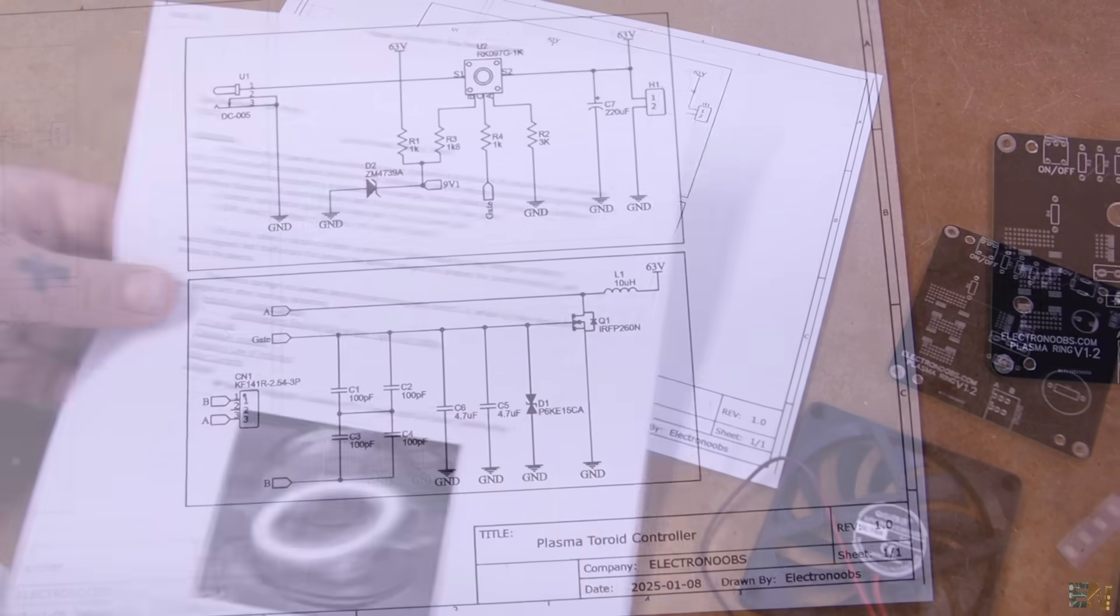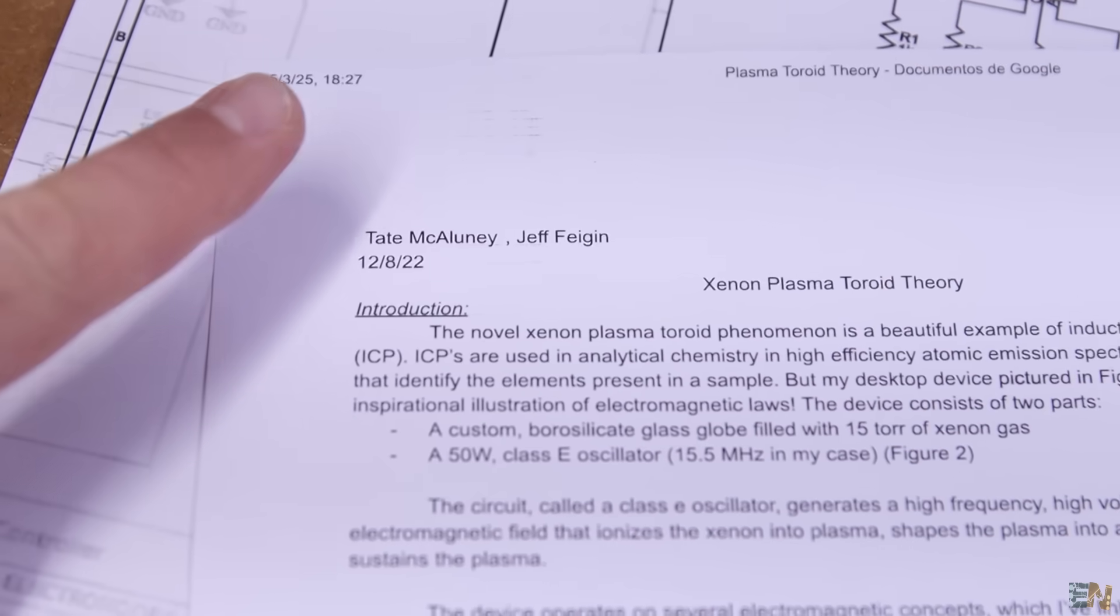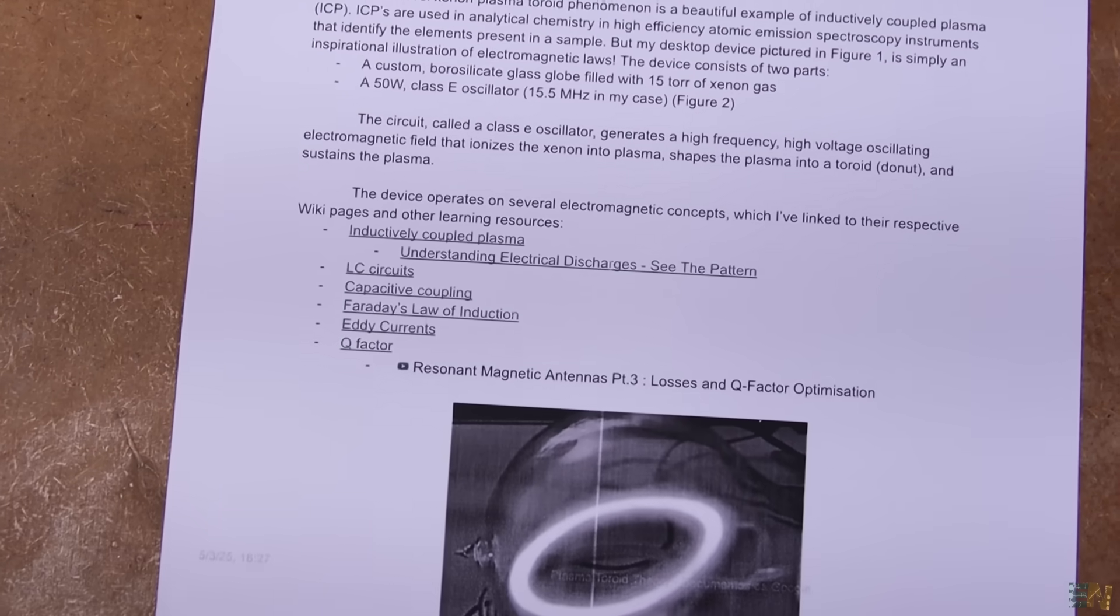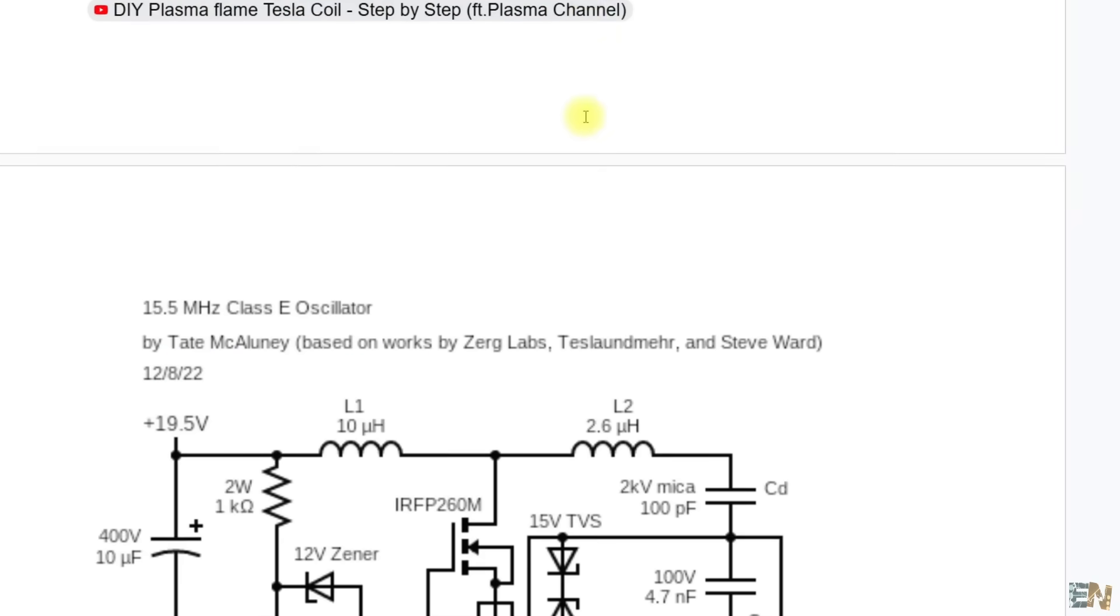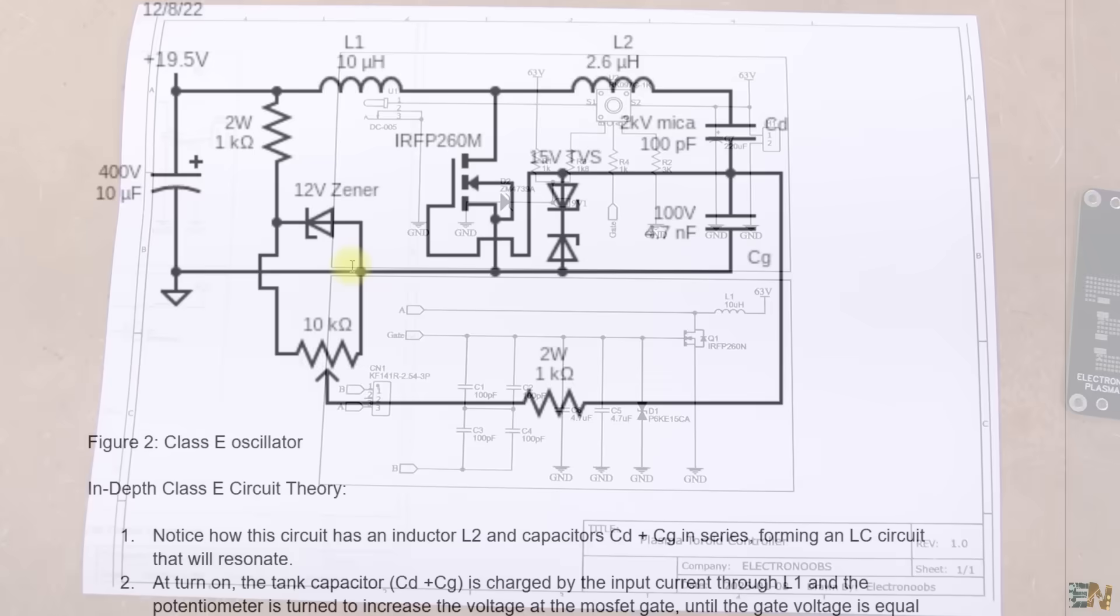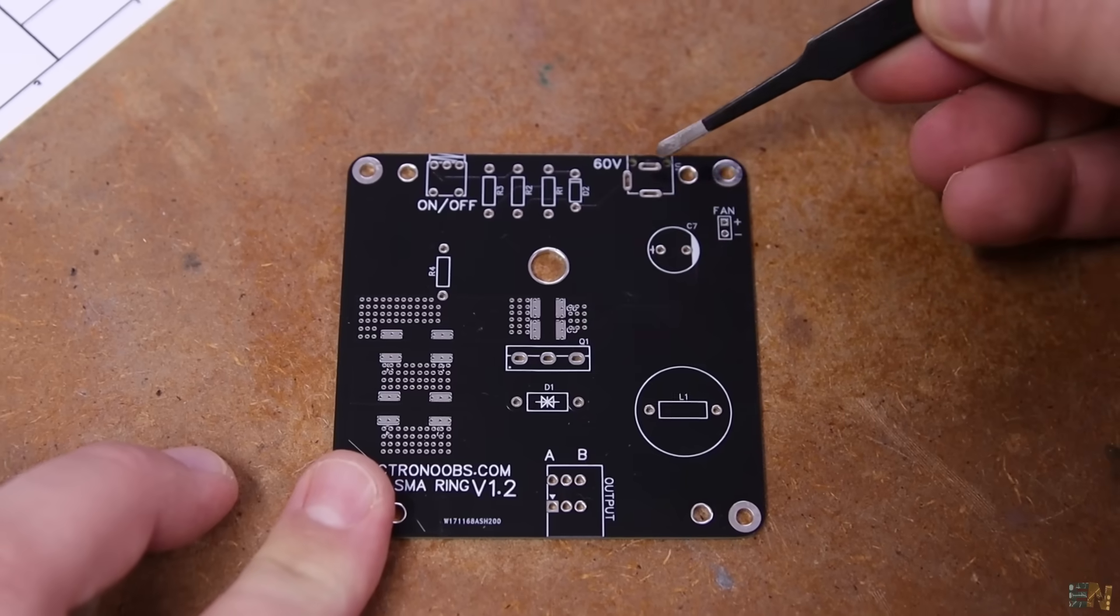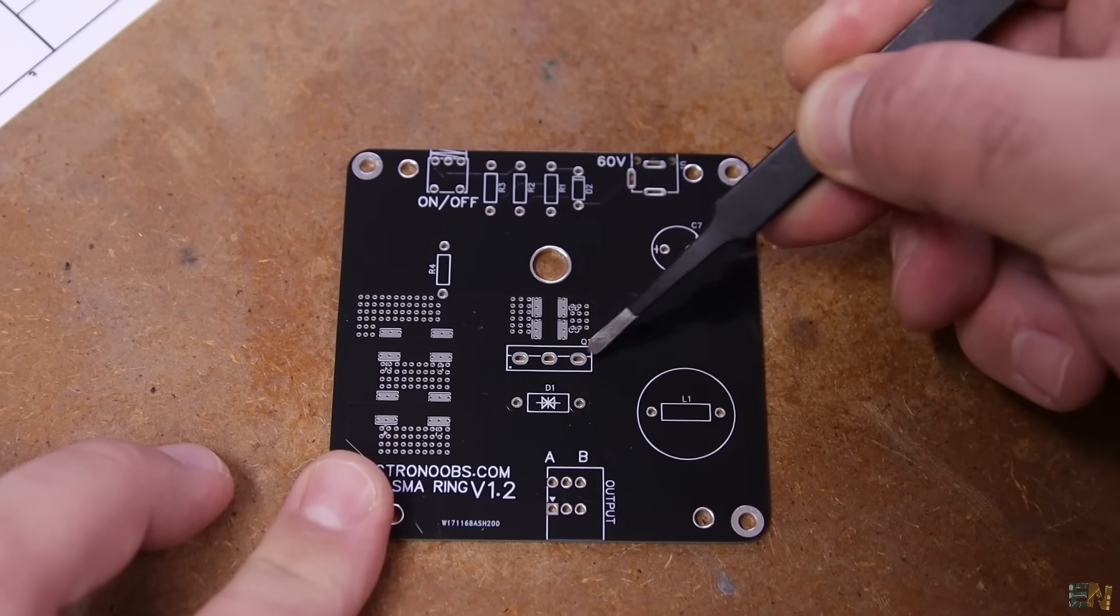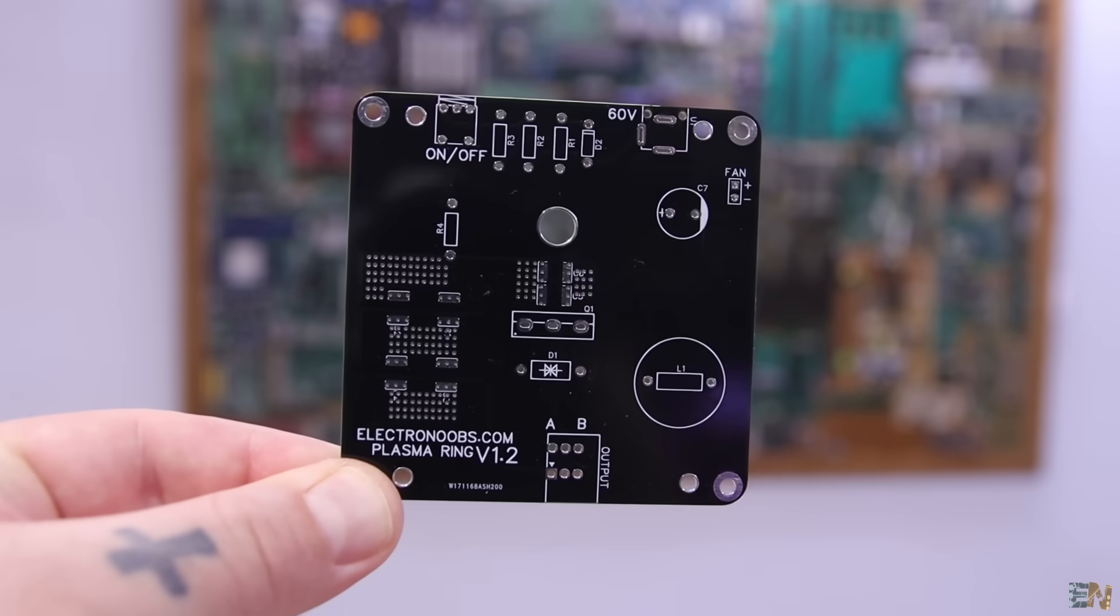My project is based on this document that I found online by Tate McAlooney and Jeff Fajin. You have all the theory, the optimization, an example circuit, graphs and observations. So based on this example, with minor changes, I've made my circuit and then passed to PCB. I have the main input, a potentiometer for control, the MOSFET and the coil and capacitors for oscillations. And this is a class E oscillator.